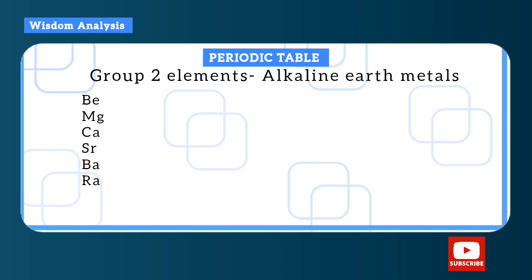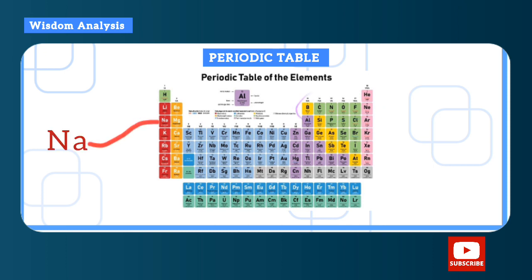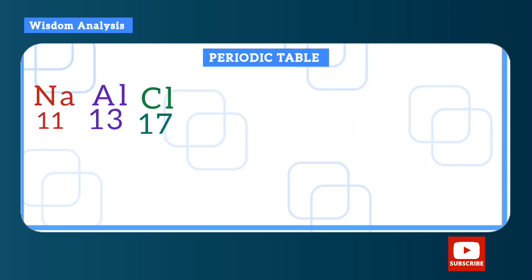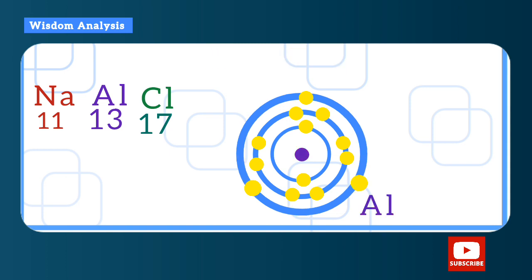Now let's go to periods. Let's pick period three — the third horizontal row. If you draw the atomic structure of sodium, you can see it has three shells; aluminium has three shells; and chlorine also has three shells. So the number of shells is what gives the period number.